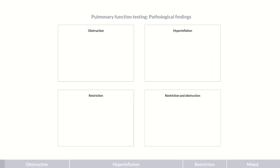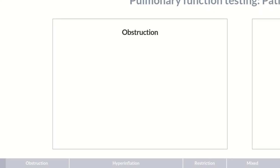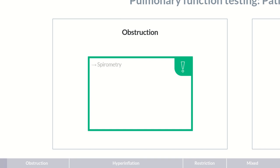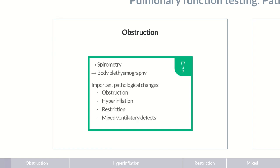Pulmonary Function Testing – Pathological Findings. The last two episodes of this Chalk Talk series focused on how spirometry and body plethysmography work. This episode will discuss typical findings of these pulmonary function tests in obstruction, hyperinflation, restriction, and mixed ventilatory defects.